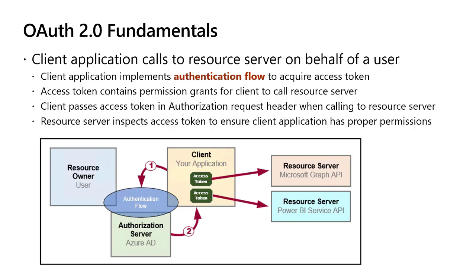The resource server — something like the Power BI Service API — is able to inspect the access token, verify it was created by a trusted authorization server like Azure AD, and read the permissions or scopes baked into the token. From that, a secured API can determine whether the caller should succeed or should be given an access denied error.